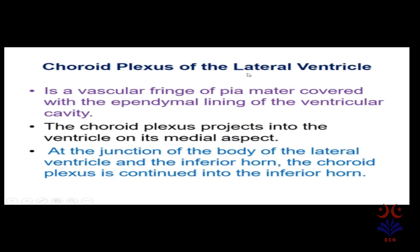Looking at the choroid plexus in the lateral ventricle: it is a vascular fringe of pia mater covered by the ependymal lining of the ventricular cavity. These ependymal cells are the supporting cells of the central nervous system. The choroid plexus projects into the ventricle on its medial aspect. At the junction of the body of the lateral ventricle with the inferior horn, the choroid plexus continues into the inferior horn — so only the inferior horn among the lateral ventricle horns contains the choroid plexus.